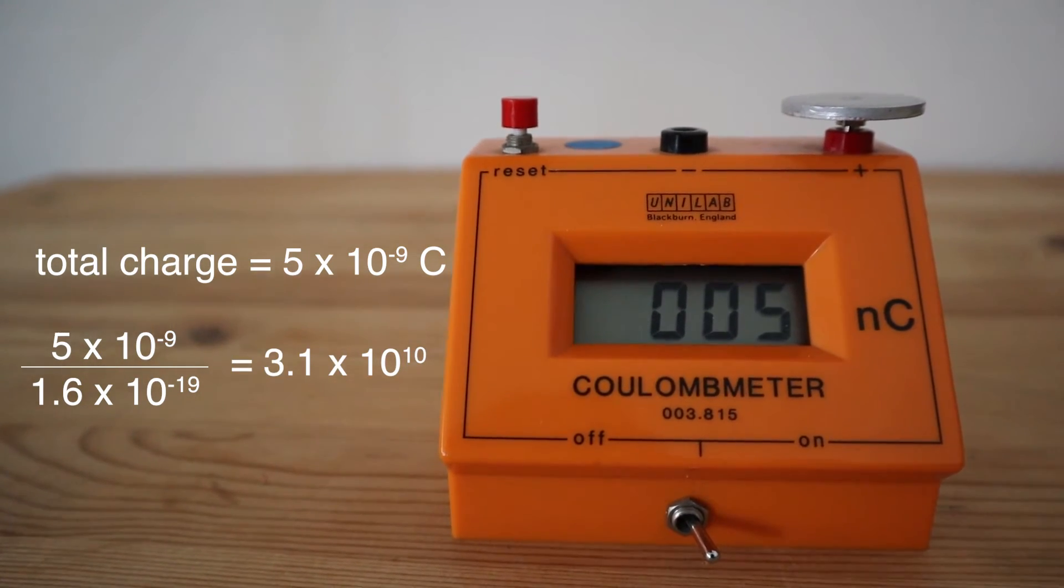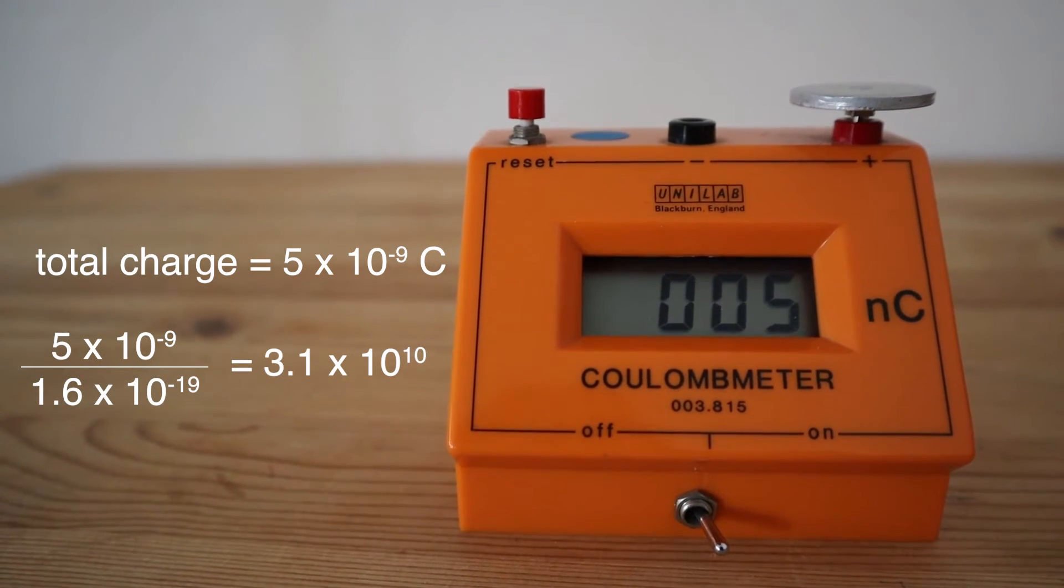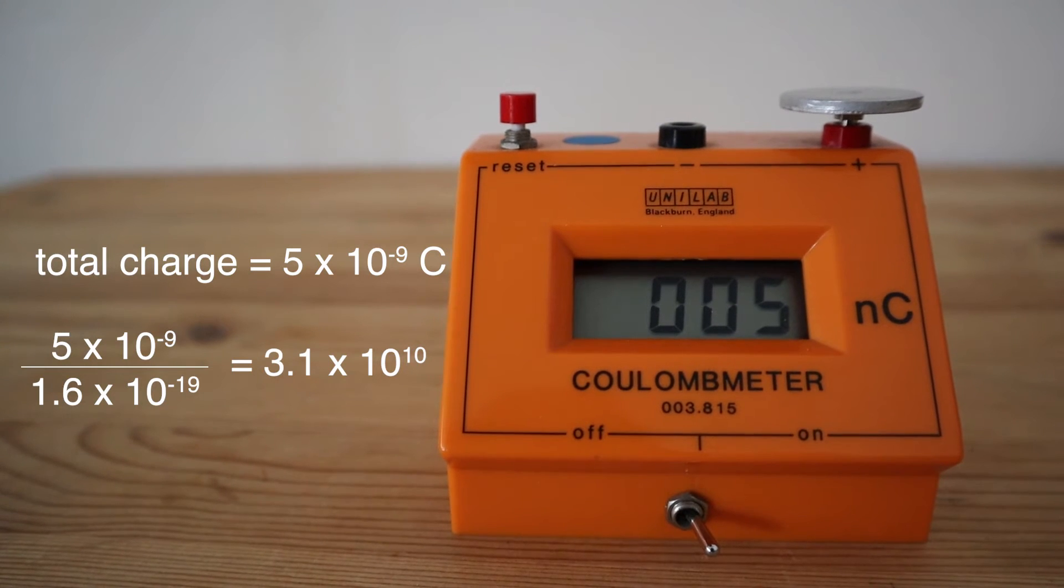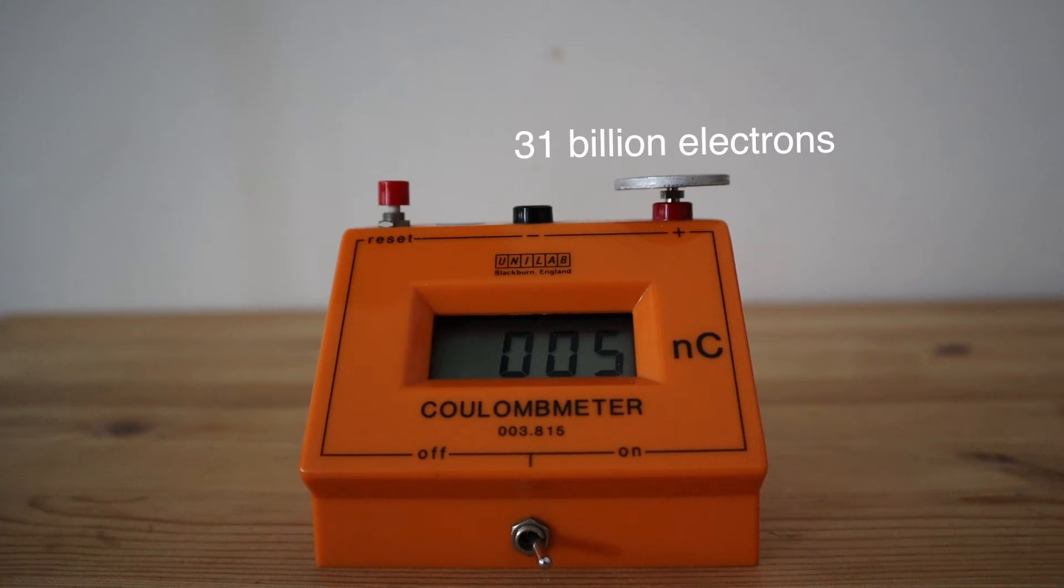So we have transferred 3.1 times 10 to the power of 10 electrons onto the metal plate from the balloon. So our tiny maneuver was able to transfer 31 billion electrons onto the plate.